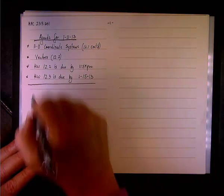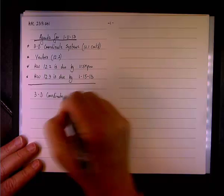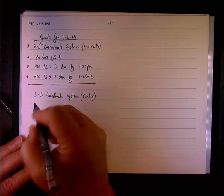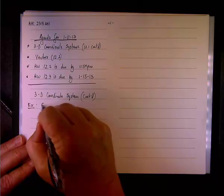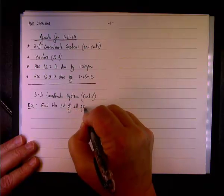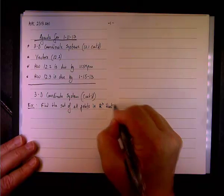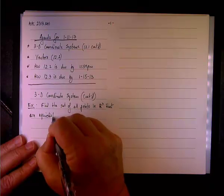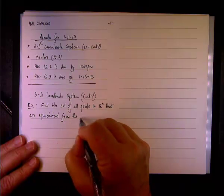Okay, so the first example, first of all, this is what we are doing. And here is the first example. We want to find a set of four points in R³ that are equidistant from the points.